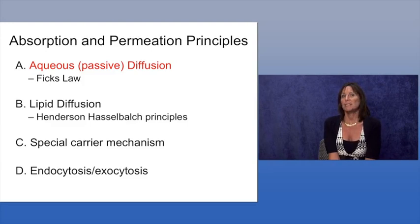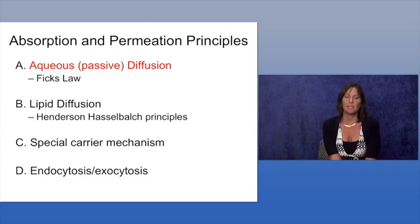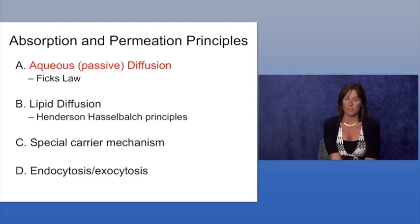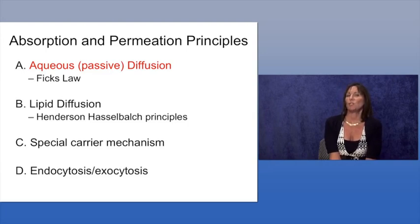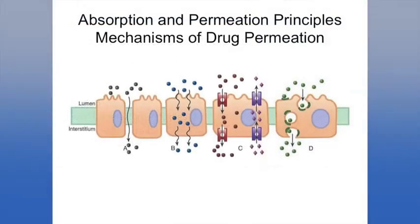The second concept is lipid diffusion — a drug moving through a lipid membrane, governed by Henderson-Hasselbalch principles. The third mechanism involves specific carrier mechanisms, which we mentioned in relation to transport across the GI tract. Finally, there is endocytosis and exocytosis, best explained with a picture. Let's look at all four mechanisms.